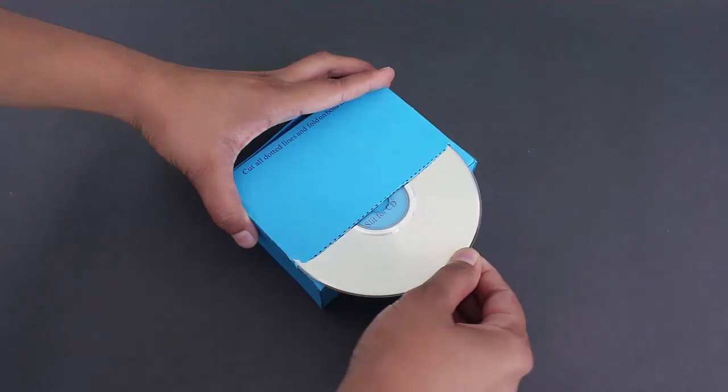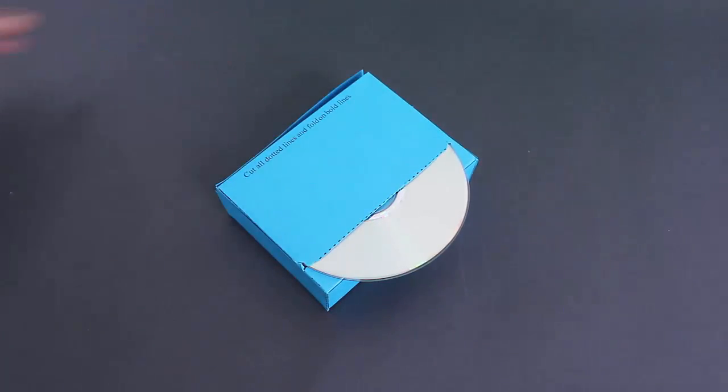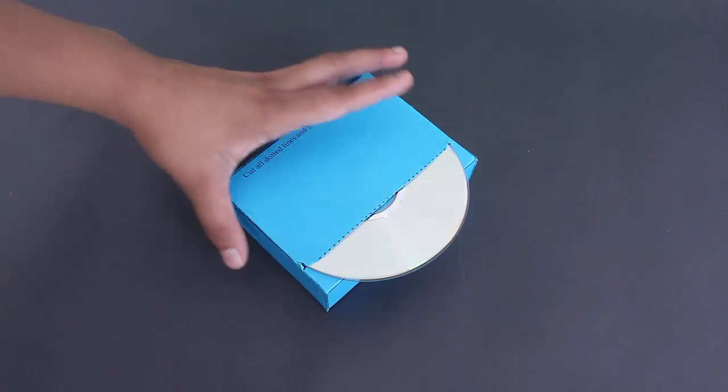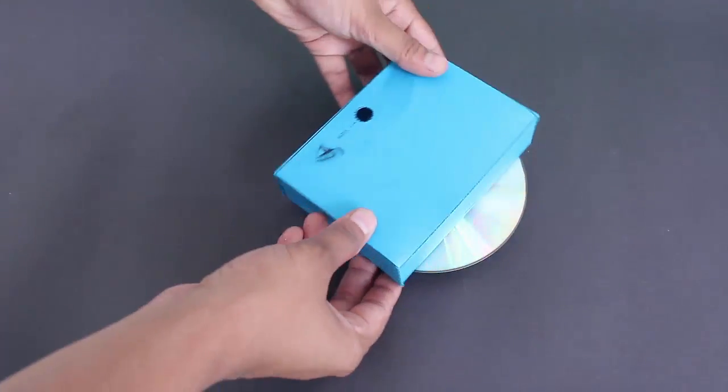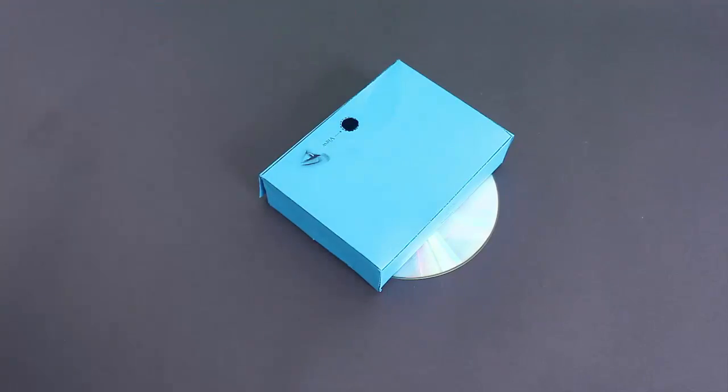Ensure that the shiny part of the CD faces down. What you see is the white surface of the CD. Now the spectroscope is ready.